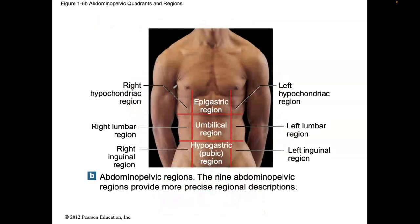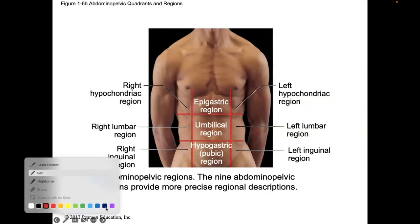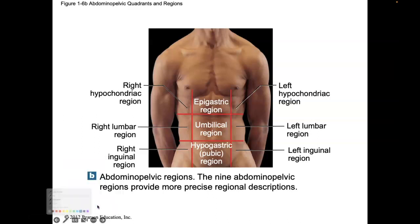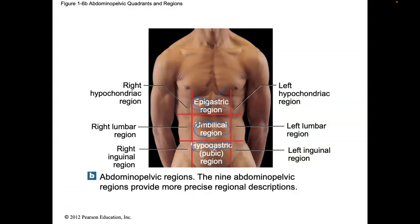Now we have regions — nine regions. Right here in the center where the belly button is, that's the umbilical region. Right above it is the epigastric region: epi means above, gastric means stomach, so epigastric is above the stomach. Below it is the hypogastric: hypo means under, epi means above. The other term for hypogastric, being that it's near the pubic region, is the pubic region.